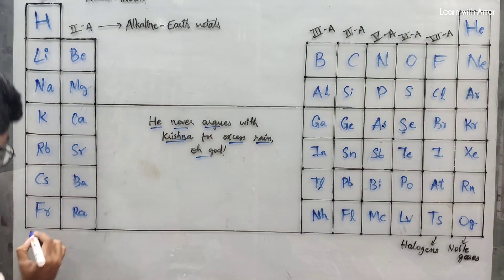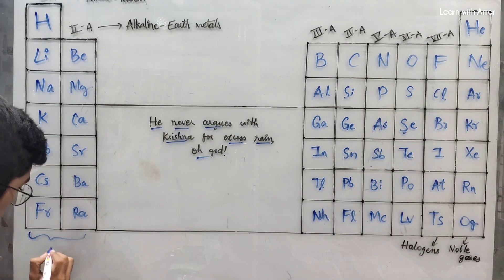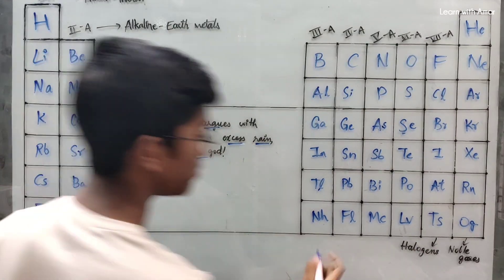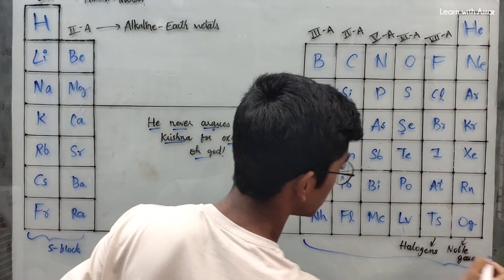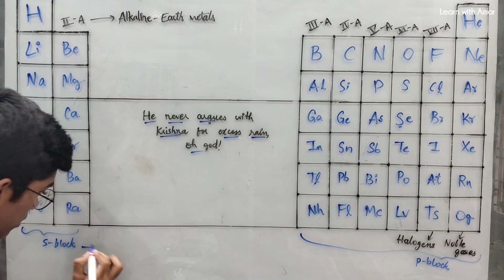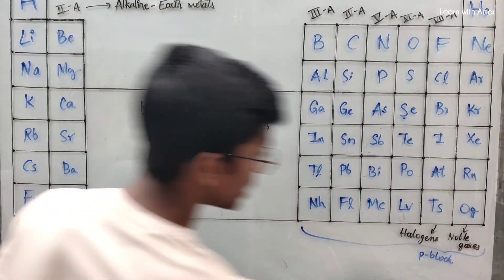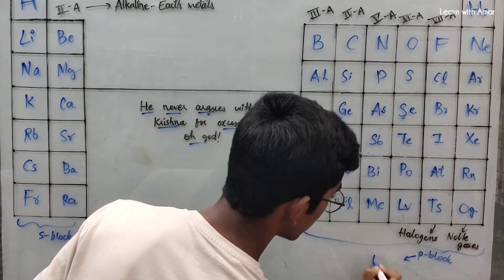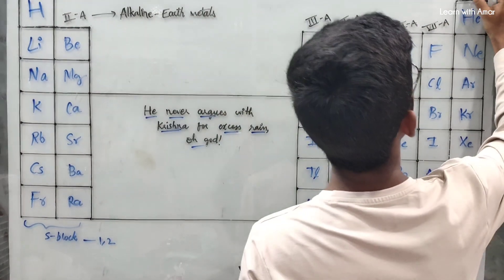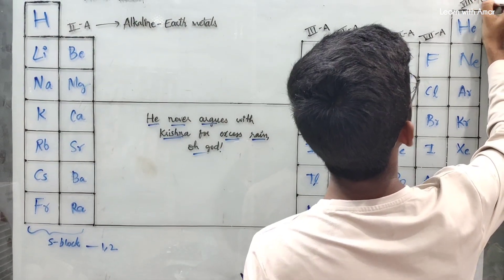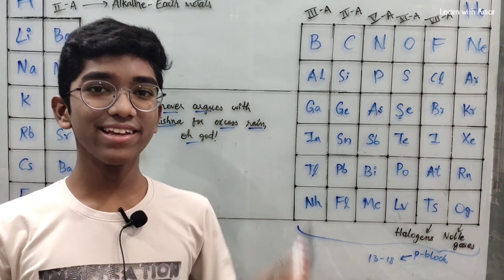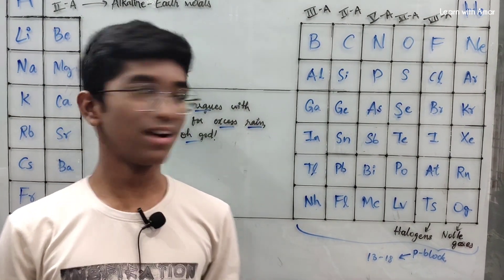So these two groups are the S block, and the elements in them are known as S block elements. Groups 1 and 2 are S block elements, and groups 13 to 18 (3A to 8A) are P block elements. These are the tricks to remember the elements in S block and P block groups.